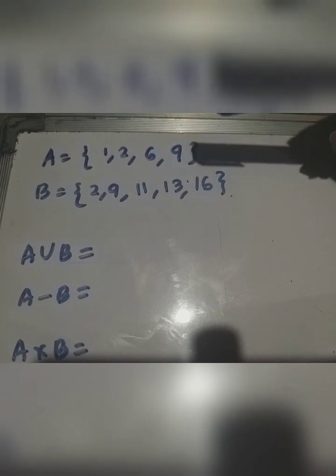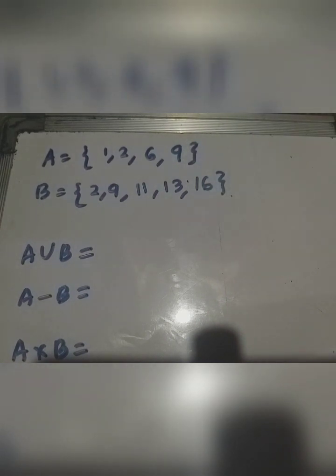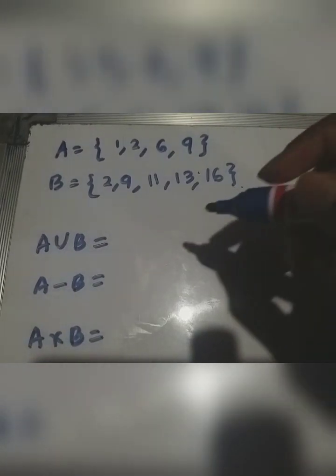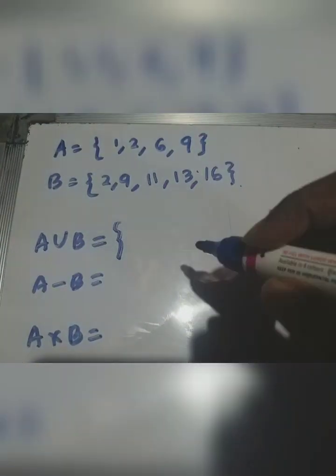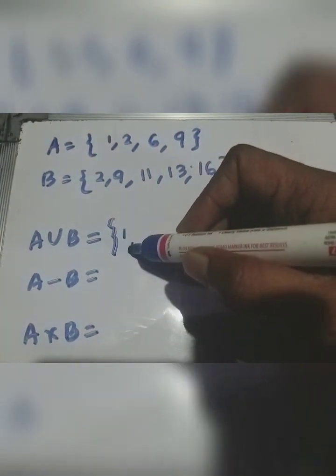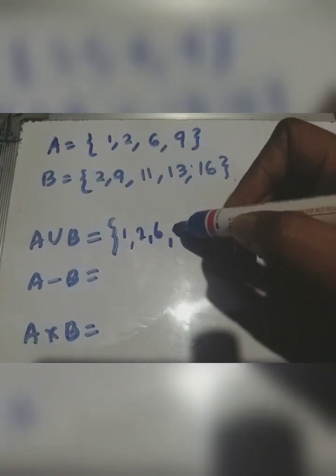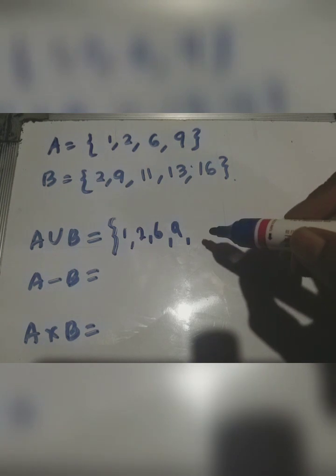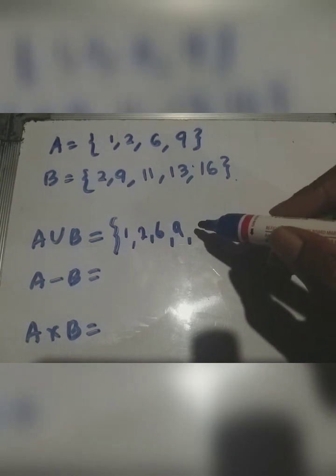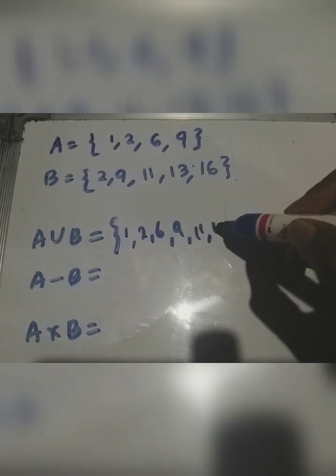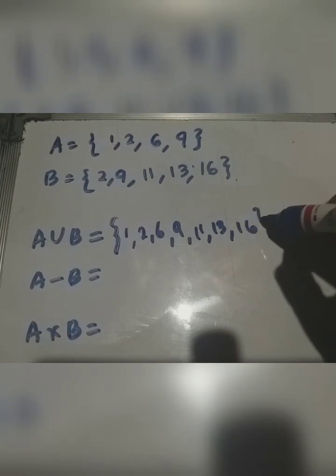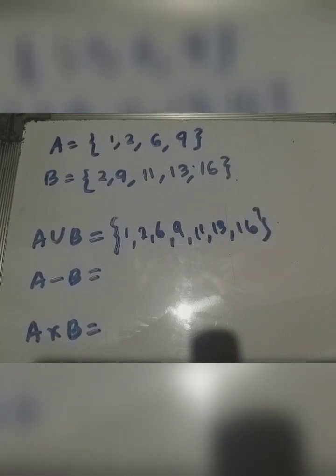If A = {1, 2, 6, 9} and B = {3, 9, 11, 13, 16}, then find A union B. A union B = {1, 2, 6, 9, 11, 13, 16}.